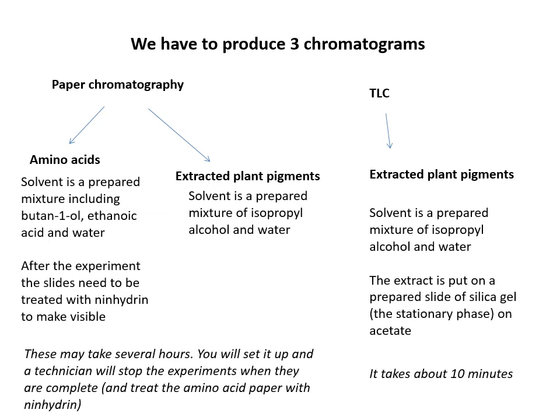There are special solvents used for each type — the paper and TLC ones take different amounts of time. Another key difference is that for the amino acid chromatogram, you need to develop it to make the spots visible. After the experiment, the paper needs to be treated with ninhydrin, which may take several hours. This should be done in a fume cupboard by a technician, as ninhydrin is a hazardous chemical.